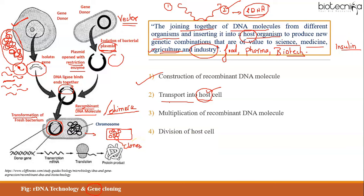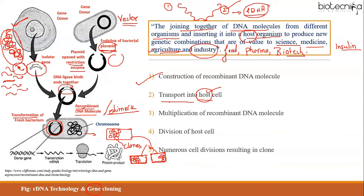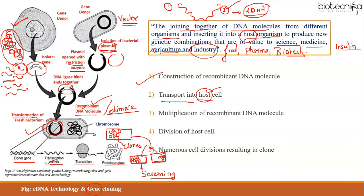For example, when bacteria is used as host, it divides through binary fission. Each new daughter cell carries multiple copies of the recombinant DNA molecule, resulting in clones through numerous cell divisions. We can perform selection or screening to check whether the bacterial cells are transformed and carry the desired recombinant DNA molecule. Inside the host cell, the gene is transcribed into messenger RNA and translated into a functional recombinant protein.